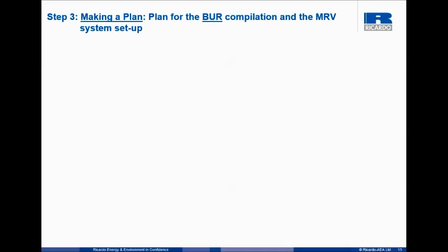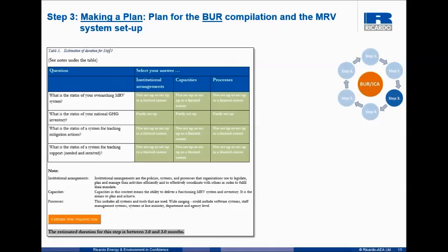Let's move on to step three — making a plan for the BUR compilation and the system setup. Step three is a little more complex than the other steps and there's a matrix. The four questions are: status of overarching MRV system, status of national GHG inventory, tracking mitigation actions, and tracking support. On the other dimension, we're looking at the arrangements for those questions, the capacities, and also the processes. You need to spend a little bit more time thinking about how to answer this. The estimate time button is below the table — push that — and here we're estimating that this country will need between about two and three months to go through all the work necessary.